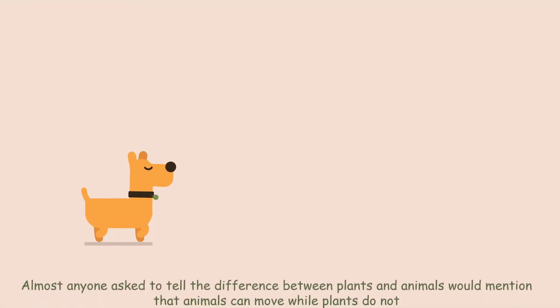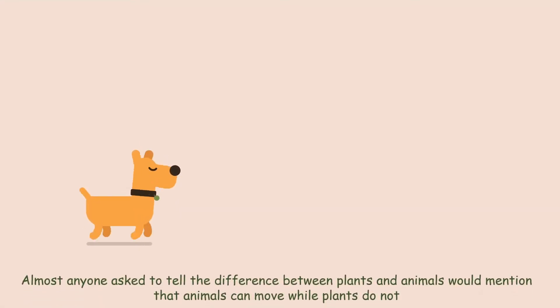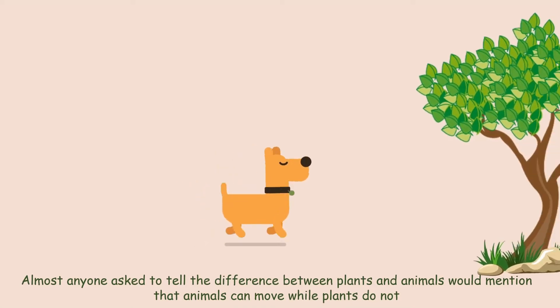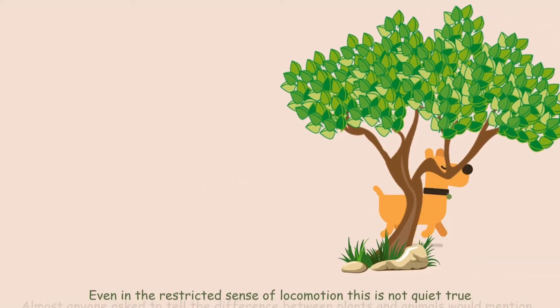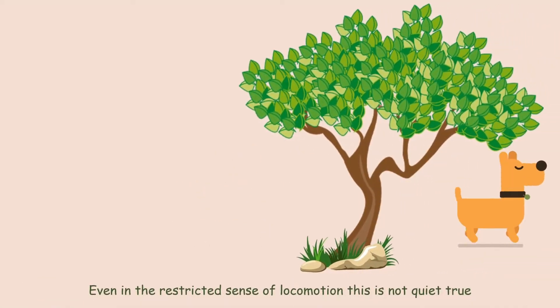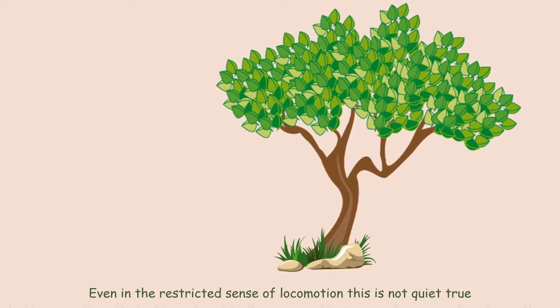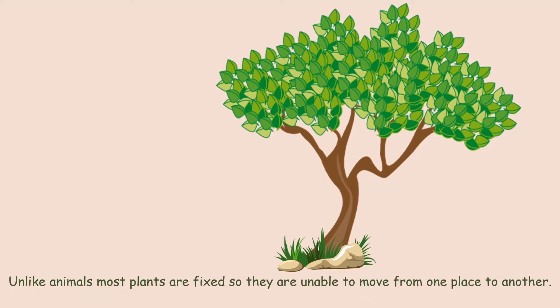Almost anyone asked to tell the difference between plants and animals would mention that animals can move while plants do not. Even in the restricted sense of locomotion, this is not quite true. Unlike animals, most plants are fixed so they are unable to move from one place to another, but they are still capable of some form of movement.